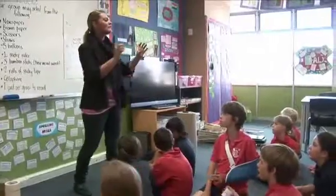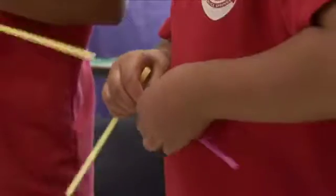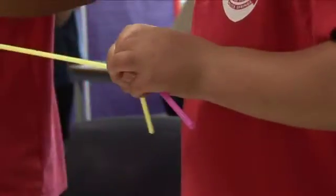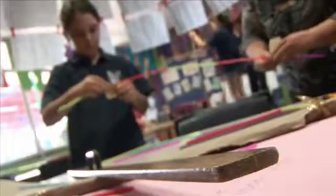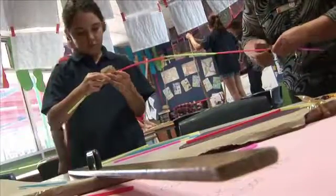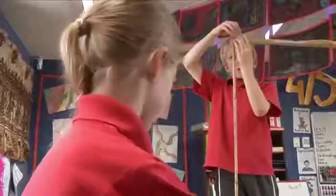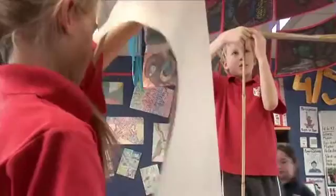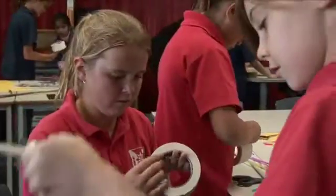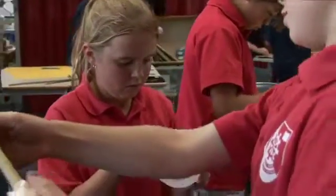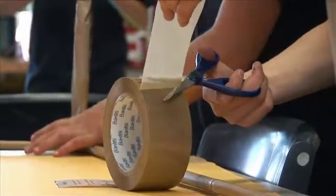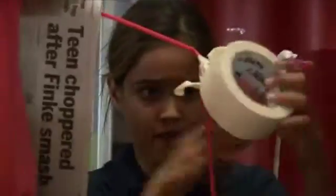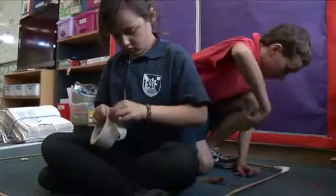I'll be explaining the resources to them. I've provided them with some newspapers, which I'm expecting they'll roll up to make their cubic metre. I've given them straws, a metre ruler, sticky tape, and some cellophane. They will be problem solving together to decide how they can construct this cubic metre with things that aren't actually a metre long, so it will be a challenge for them.